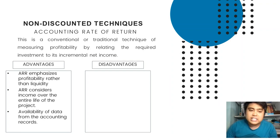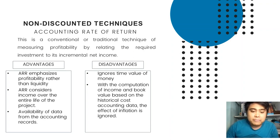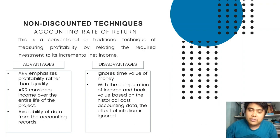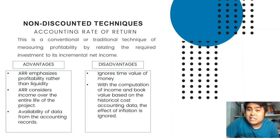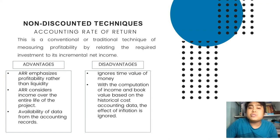There are also disadvantages of using ARR. Number one: since it is a non-discounted technique, it ignores time value of money. Number two: with computation of income and book value based on historical cost accounting data, the effect of inflation is ignored. Since accrual basis uses the historical cost principle, you are measuring items at cost and ignoring changes in purchasing power or the effect of inflation.